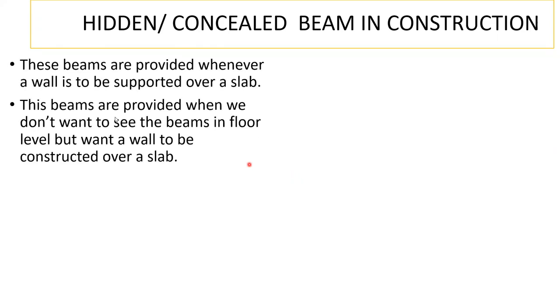In this lecture we will see what is a hidden or concealed beam in construction. These beams are provided whenever a wall is to be supported over a slab. They are provided when we don't want to see the beams at floor level but want a wall to be constructed over a slab.